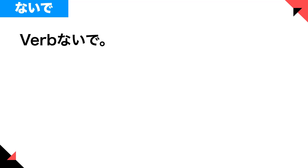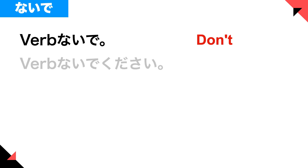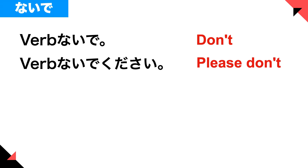Okay, this time you can use verb plus naide, but you have to end the sentence with naide. And that means 'don't do something.' You can make it slightly more polite — even though this is kind of direct and won't be so polite — but better than naide is verb naide kudasai. You hear this a lot in public situations.